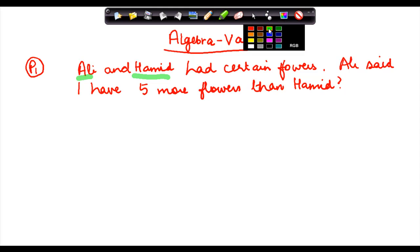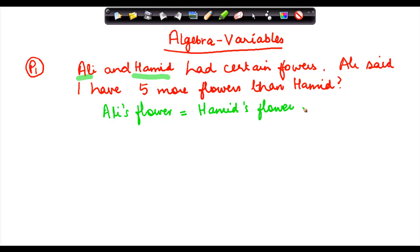Many times we come across situations where the numbers are not known. Now in such a case, what can happen? We don't know how many flowers each of them has, but Ali's flowers equal Hamid's flowers plus five. Is this a correct statement? Yes, because Ali has five flowers more than Hamid. So whatever is the number of flowers which Hamid has, Ali has five more than that.